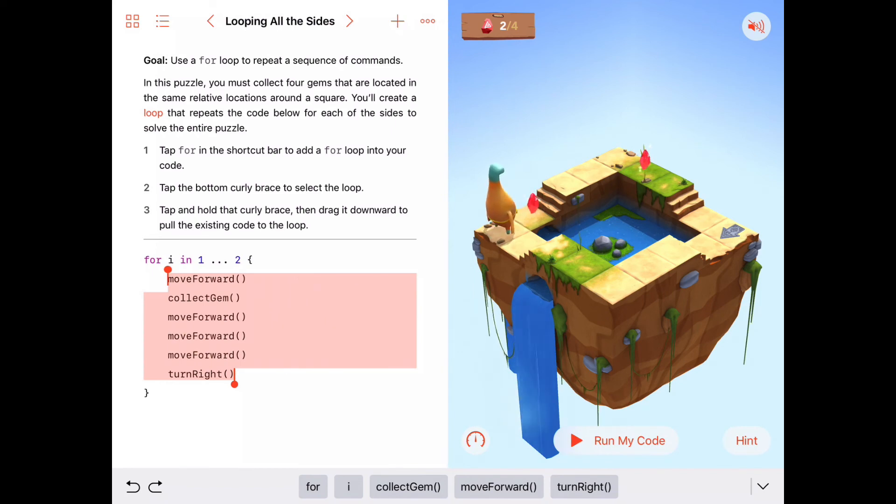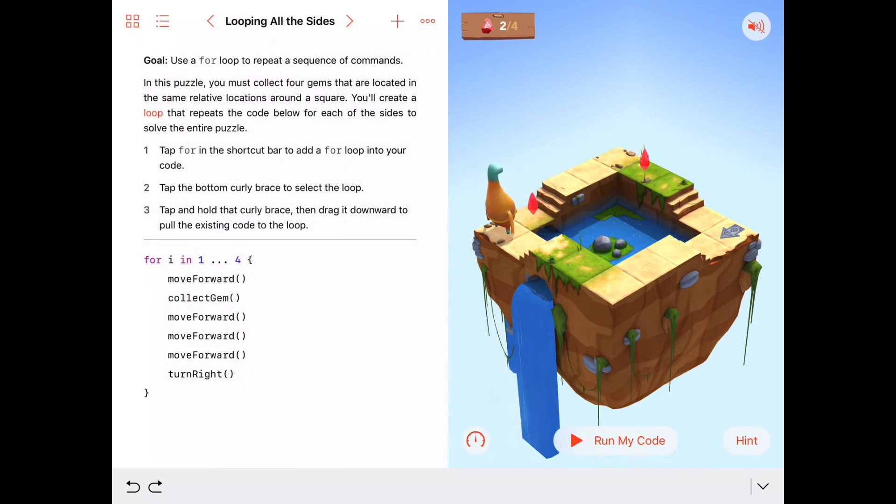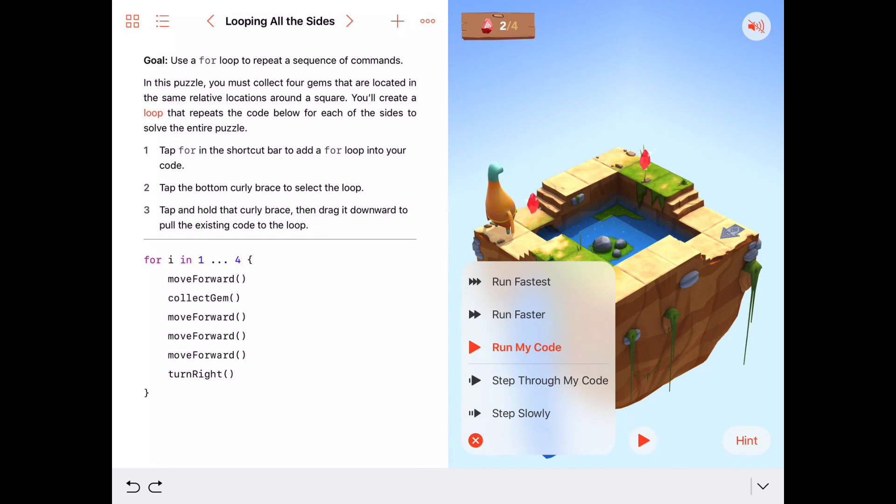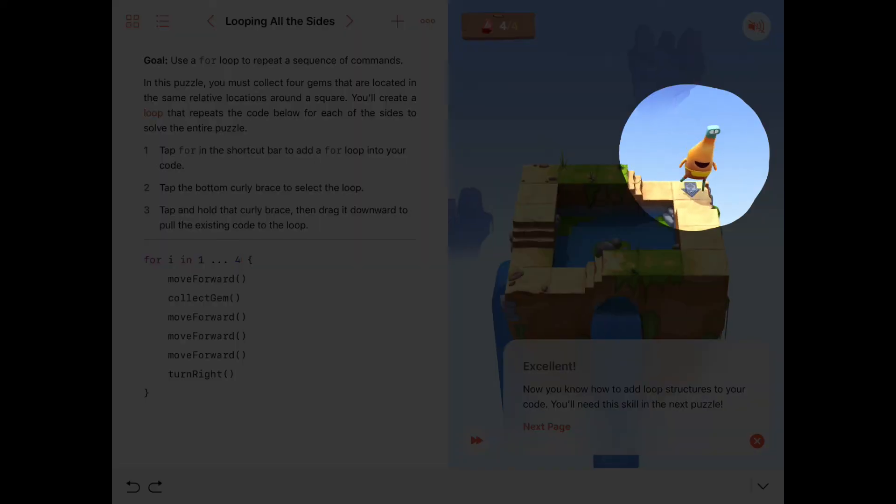Just what we thought would happen. So to fix this, we're going to select four here and have Byte do the whole thing. I'm going to go ahead and run my code a little faster because I'm confident that this should solve the entire puzzle. There's one gem, he turns right. This is the second iteration of the for loop. He collects the gem. This is the third iteration of the for loop and the fourth iteration of the for loop. All right, so he did it four times and he got all four gems.